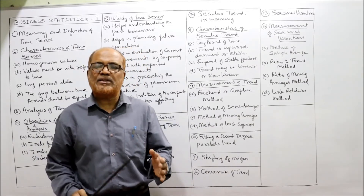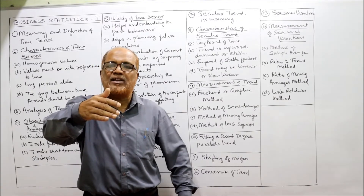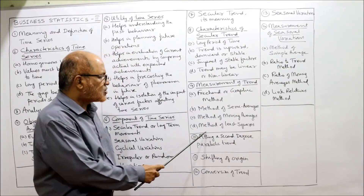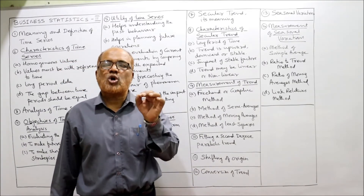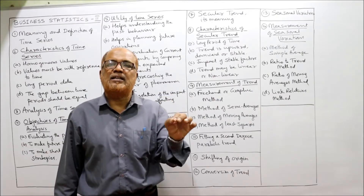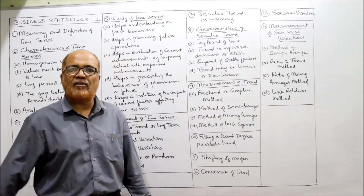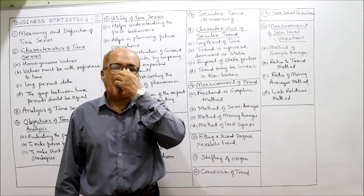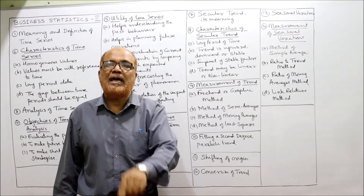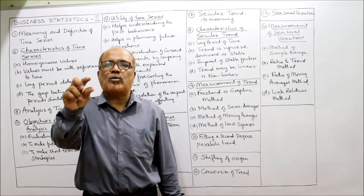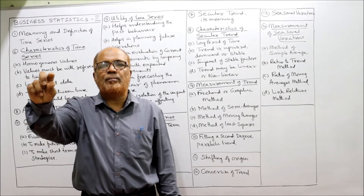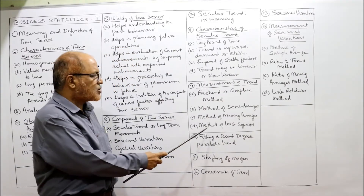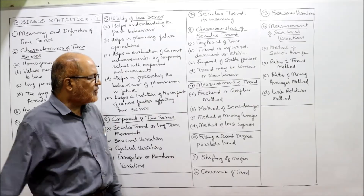The third method is the moving average method, where we continuously calculate averages in a moving manner — this will be clearer when doing problems. The fourth and most commonly used method is the method of least squares. In this method, we use the mathematical equation y = a + bx, which is used to calculate the trend values.